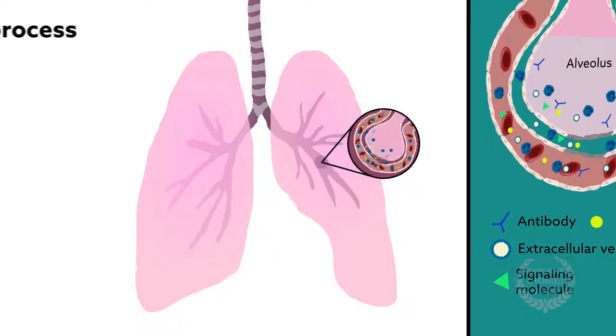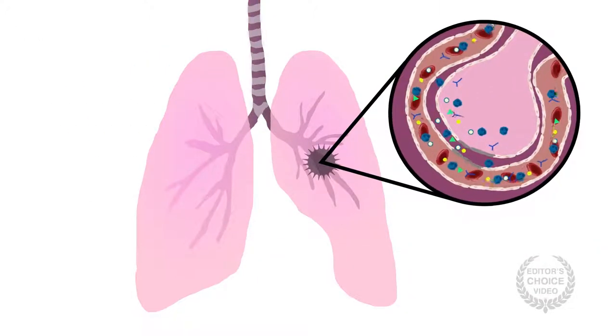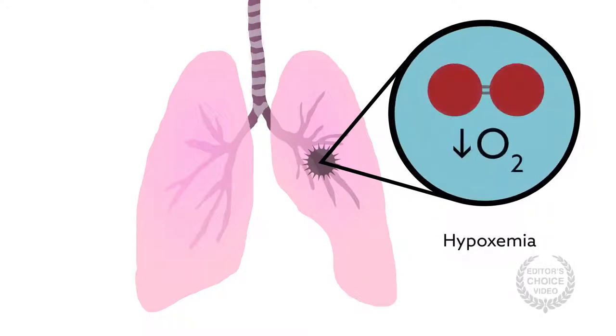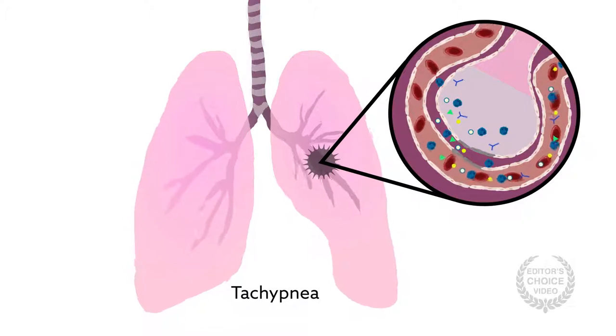Identifying the condition can be challenging because none of the signs of TRALI, which often include rapid onset of pulmonary edema, hypoxemia, and tachypnea, are specific.